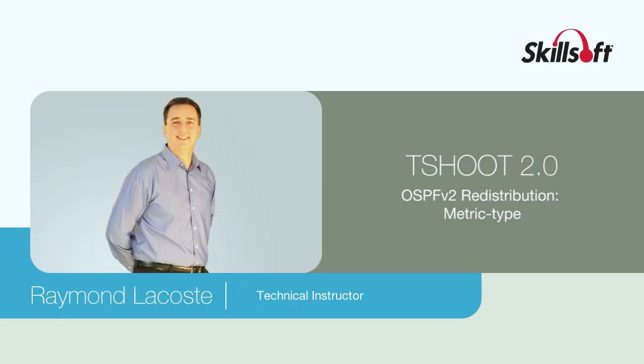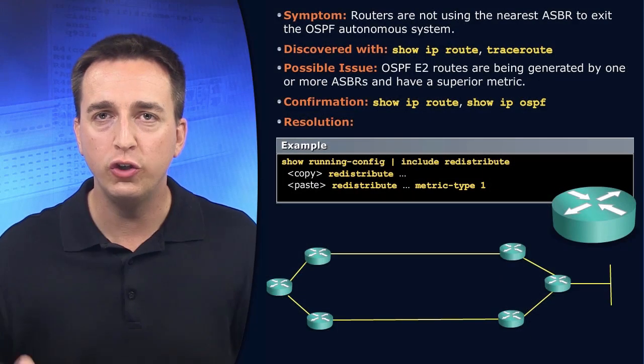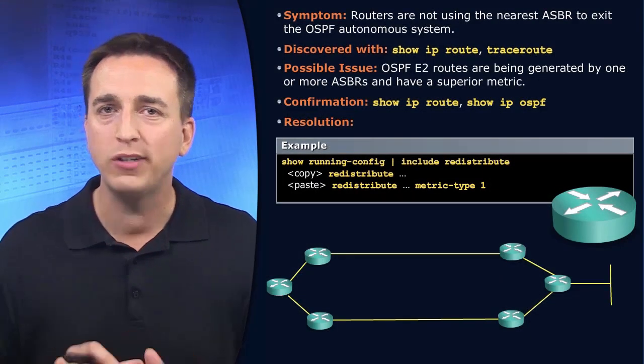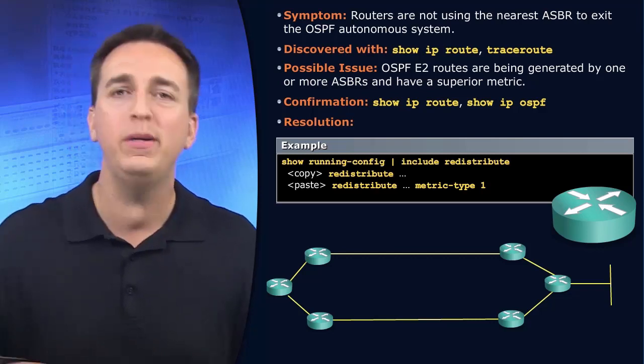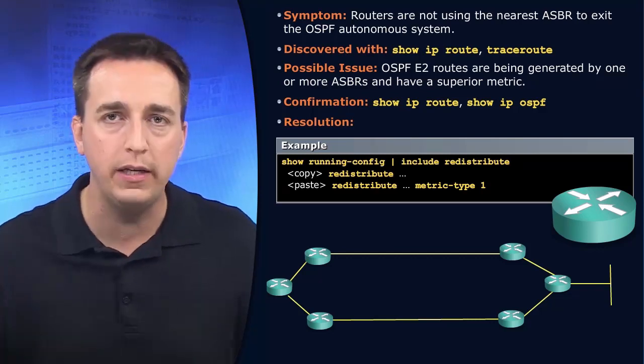When you have a single point of redistribution into OSPF, the metric type that is being used won't matter. It could be E2, it could be E1, it's not going to be a big deal.